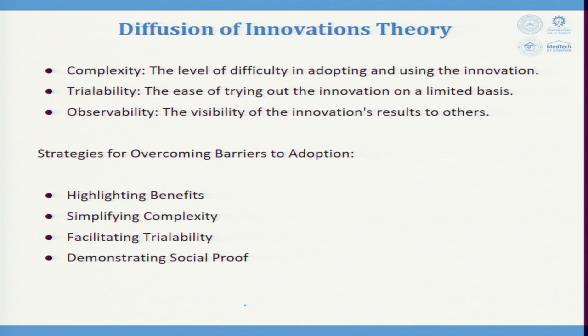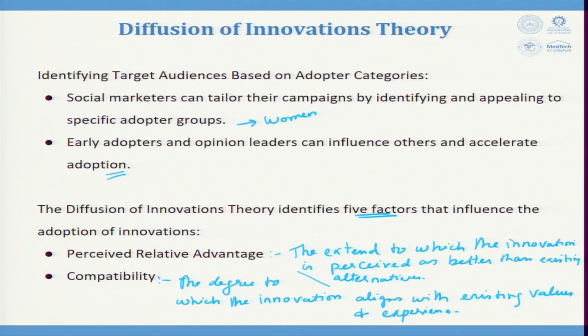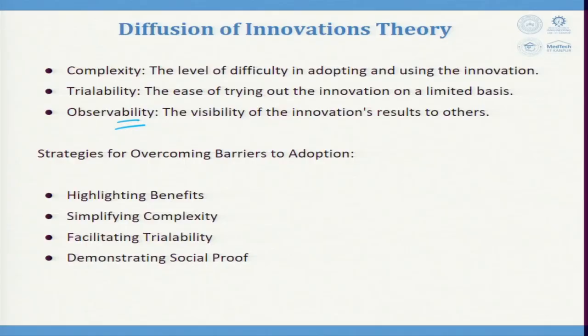Observability is very important. For example, wearing a beautiful dress such that people recognize it and say 'you are looking smart' — that is observability. So the five factors are: perceived relative advantage (what benefit do I get?), compatibility (how does it fit into existing use?), complexity (how difficult is it to adopt?), trialability (how do I try it?), and observability (how do I make others feel its impact?).